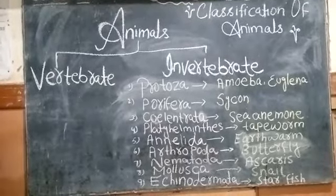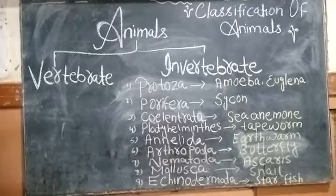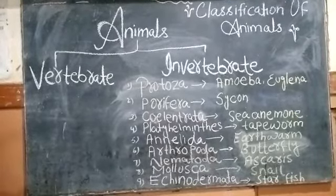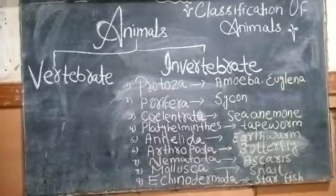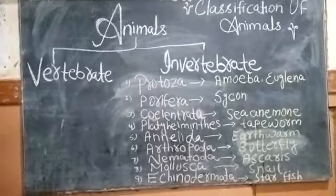Number 3: Phylum Coelenterata. Animals in this phylum have a body cavity. An example is the Sea Anemone.